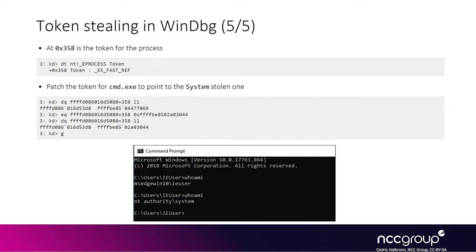To summarize: assuming you have an arbitrary read-write primitive, all you need to do is walk the linked list. In the previous example, the SYSTEM process was around the seventh entry, so you do roughly seven reads of the linked list to read the EPROCESS for the SYSTEM process, then read a pointer to its token, and finally write that pointer into your EPROCESS for cmd.exe. It's about 10 steps maximum, almost all reads, with one write at the end — and it's the same for every exploit.